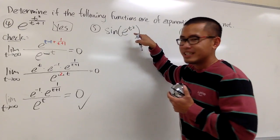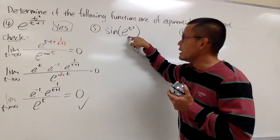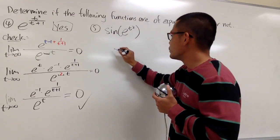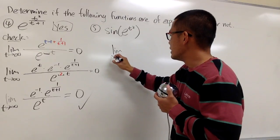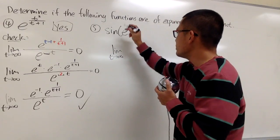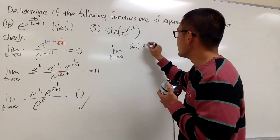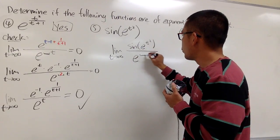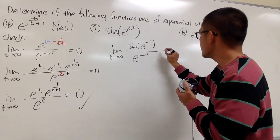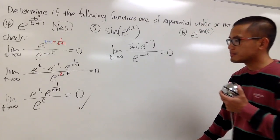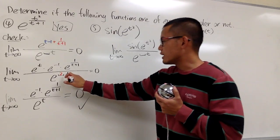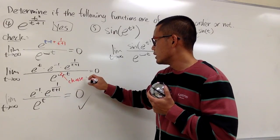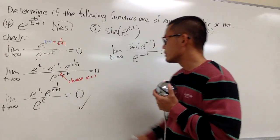Next one. Once again, we see t squared in the e, but the whole thing here is inside of a sine function. We will do the usual check: the limit as t goes to infinity, putting sine of e to the t squared on top, and finding e to the what t will make the whole thing equal to 0.